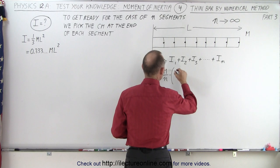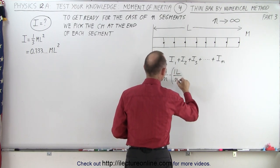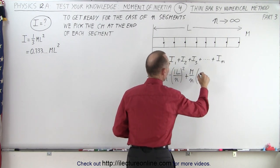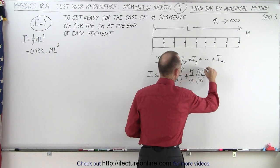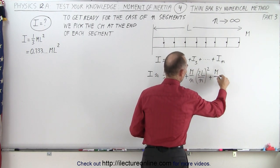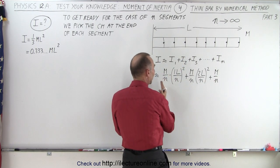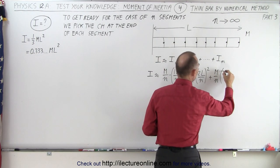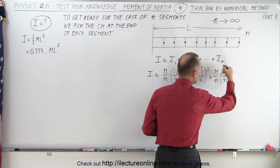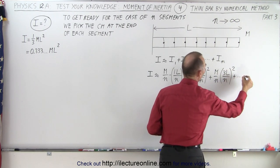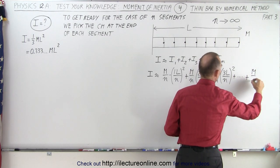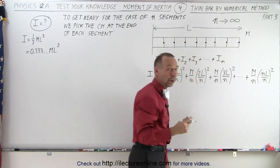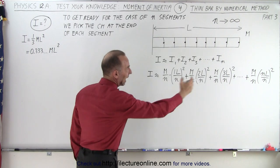So we have, in this case, that would be m over n times (1L/n)² plus m over n times (2L/n)² plus m over n times (3L/n)², and so forth, all the way until we end up with m over n times (nL/n)². Now you can see why we want to set our mass to be at the end of each segment, so we can have this format.